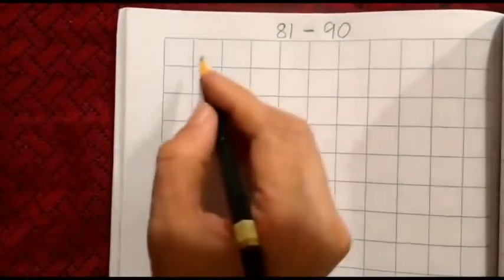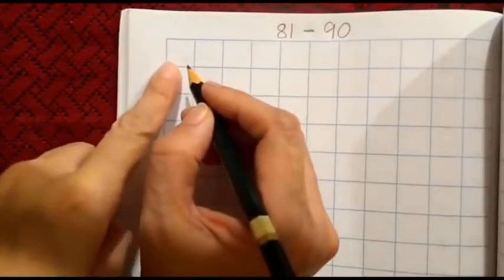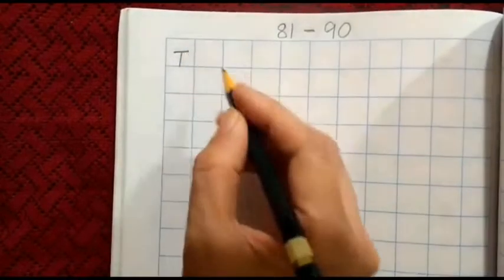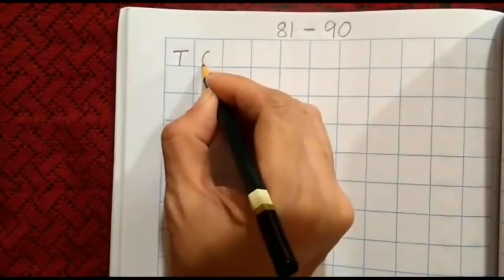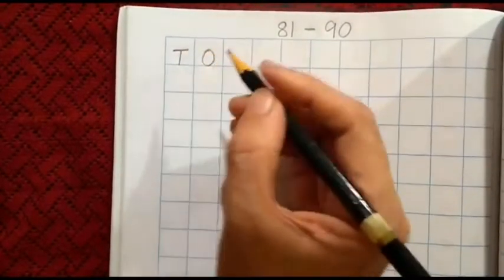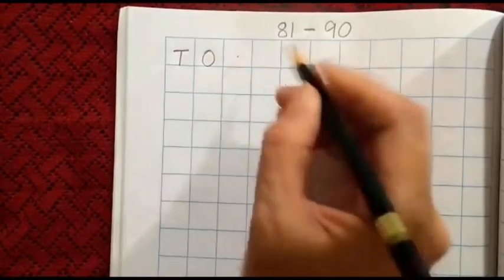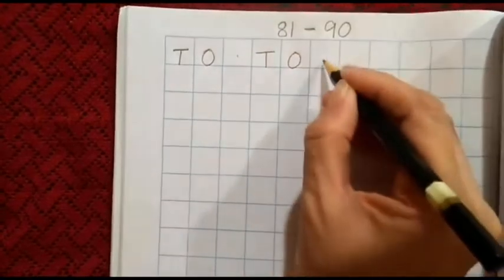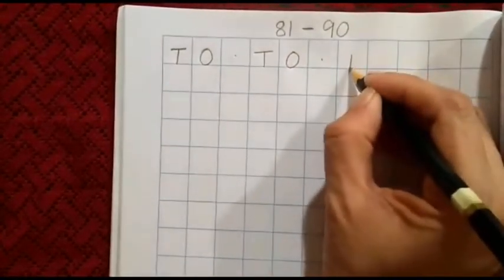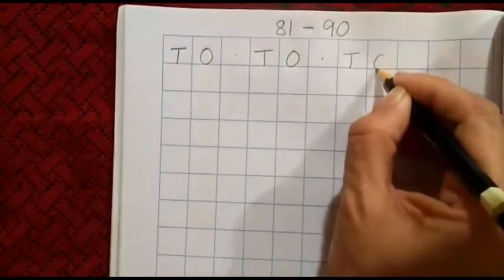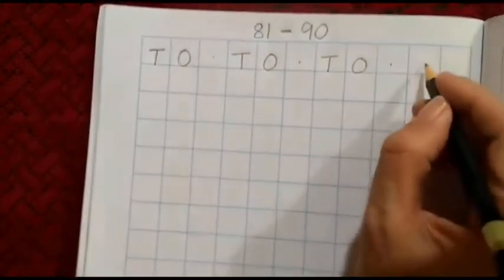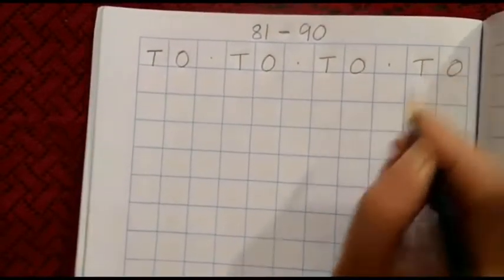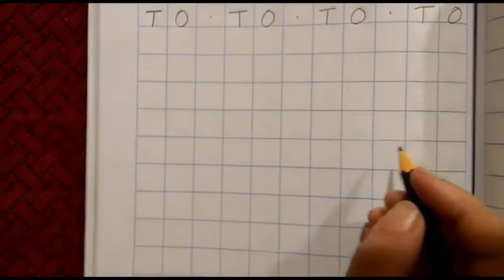First, what are we going to write? In the top left corner, in this box, we are going to write T, which stands for 10's unit, and O, which stands for 1's unit. Then we will put a dot, then again we will write T, O, again a dot, then T, O, and then again a dot, then T, and O, right? Let us start writing.